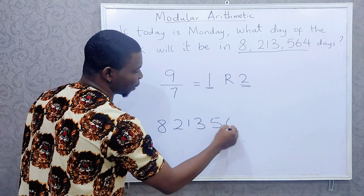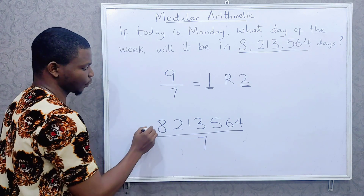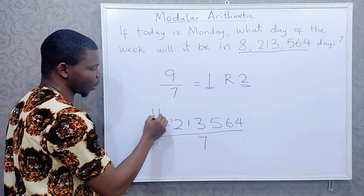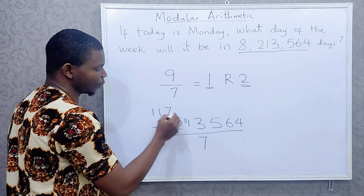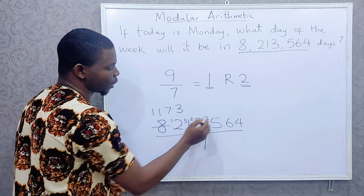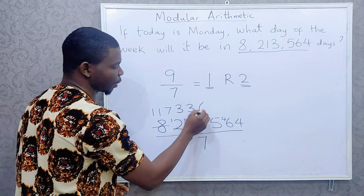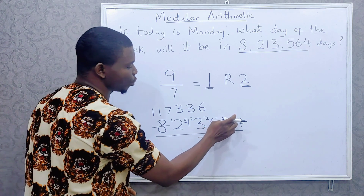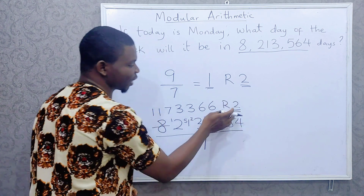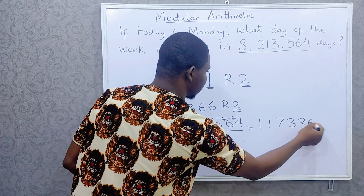We divide 8,213,564 by seven digit by digit. Seven into 8 is 1 remainder 1; seven into 12 is 1 remainder 5; seven into 15 is 2 remainder 1 — working through each digit: seven into 51 is 7 remainder 2; seven into 23 is 3 remainder 2; seven into 25 is 3 remainder 4; seven into 46 is 6 remainder 4; seven into 44 is 6 remainder 2.